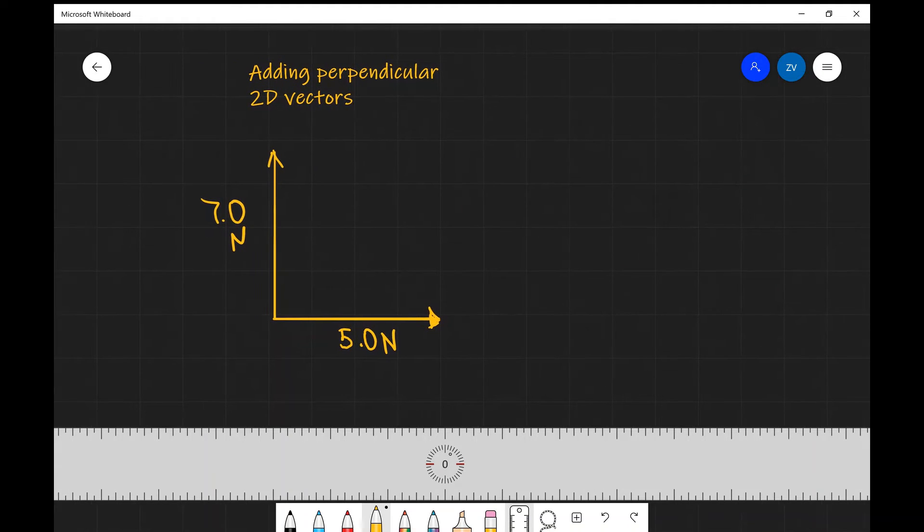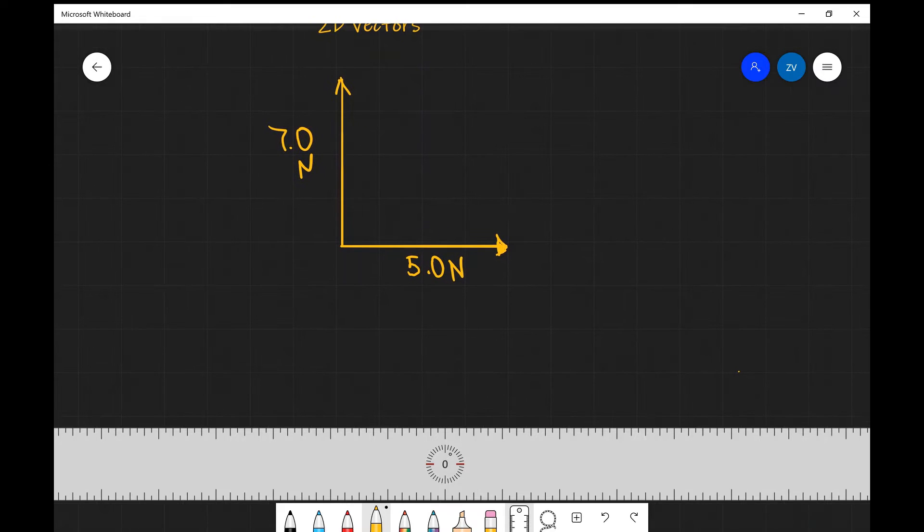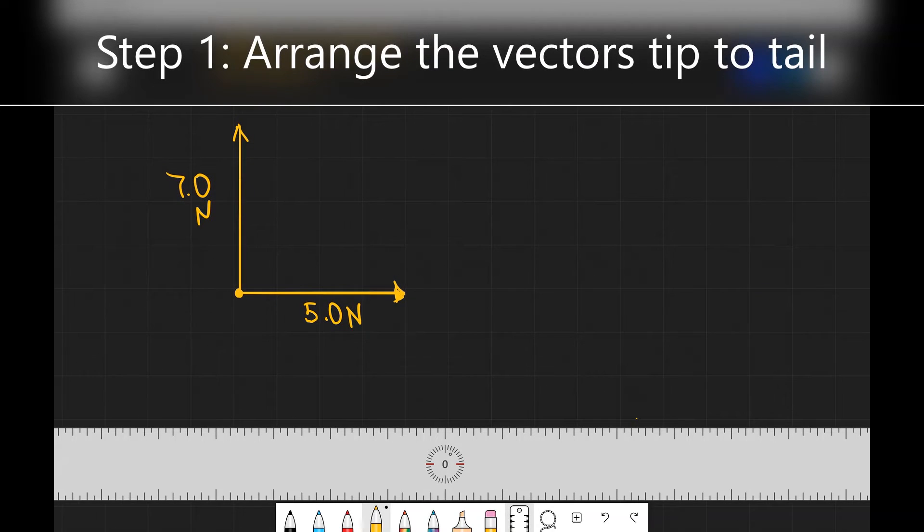Well we have two vectors over here, one is 7 newtons going upwards and we've got one which is 5 newtons going horizontally to the right. It could be acting on let's say the point, could be a sphere, could be anything in this point. Now what we can ask is what is the resultant force acting on this point. Now in order to add those two vectors there's a really important rule that we must follow and this is that we can add two perpendicular vectors only if they are arranged tip to tail. In this case we can see that they're kind of arranged tail to tail.